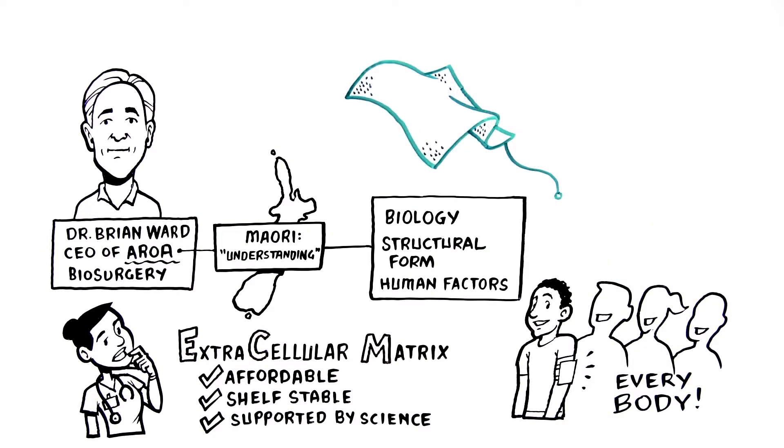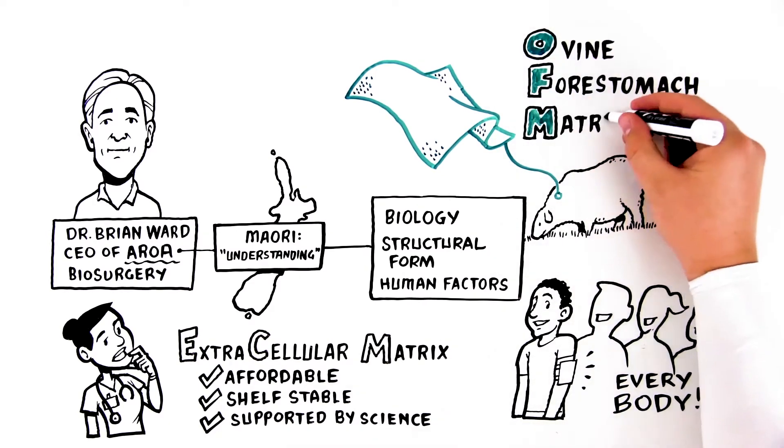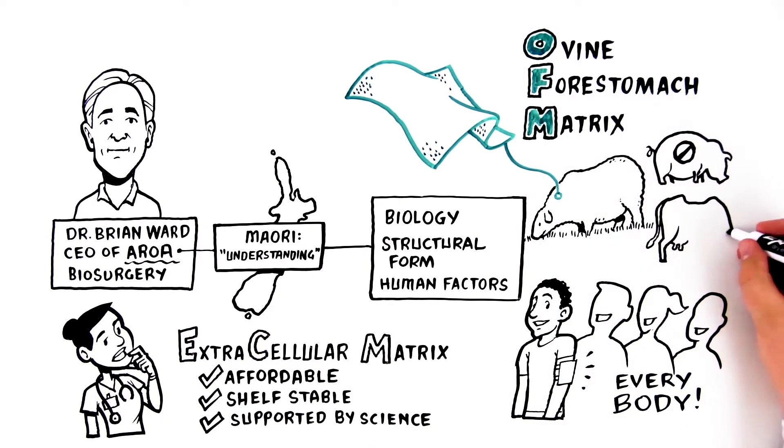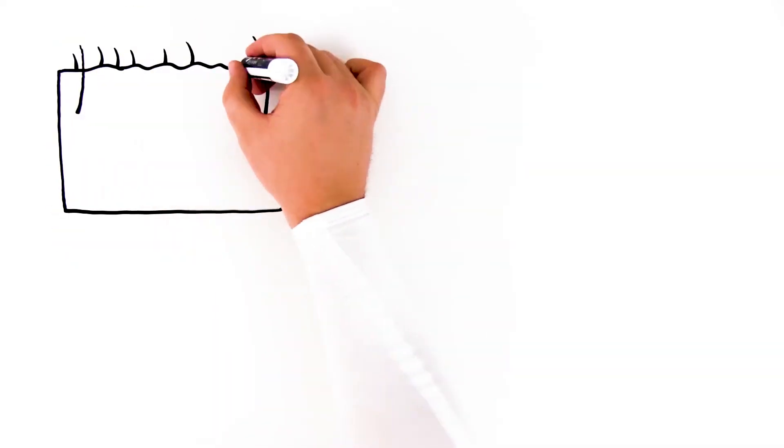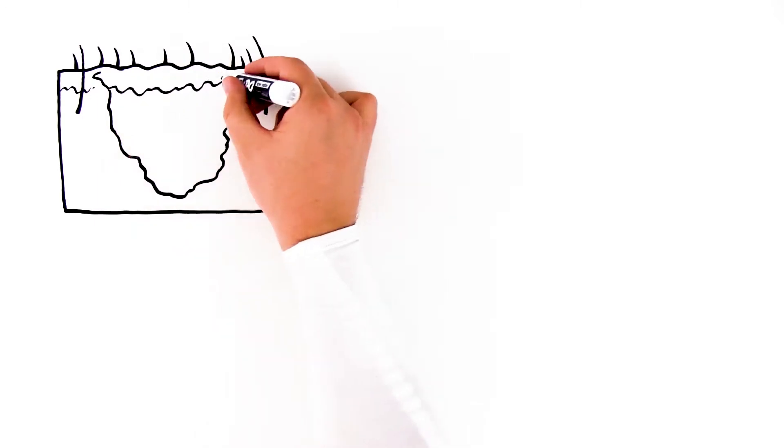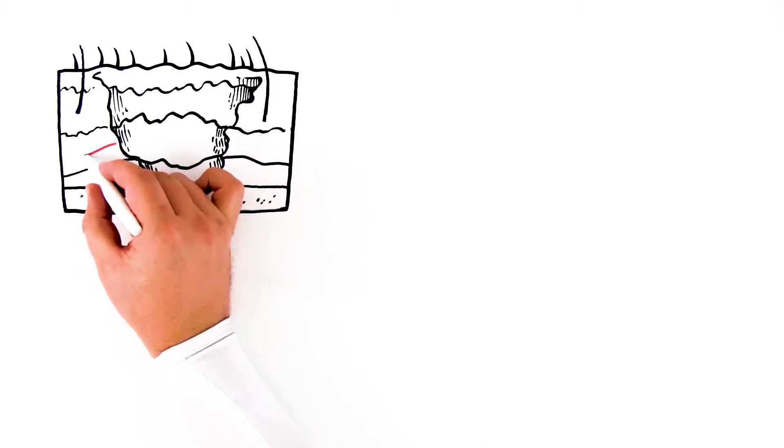Aroa Biosurgery uses the forestomach of sheep to create Endoform, ovine forestomach matrix. It's not porcine, not bovine, but ovine. This extracellular matrix provides an intact scaffold with naturally high levels of signaling molecules, which are known to have an important role in wound healing.